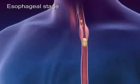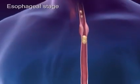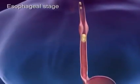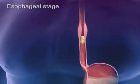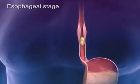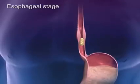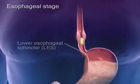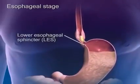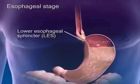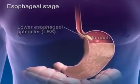During the esophageal stage, a primary wave of peristalsis initiated by the swallowing center pushes the bolus through the esophagus. As the bolus travels through the esophagus, the lower esophageal sphincter relaxes, allowing the food to enter the stomach.